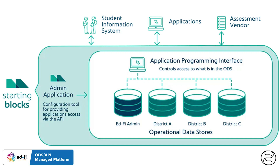For example, a student information system, or SIS, will send data using the EdFi API to Starting Blocks. Then Stadium will use the EdFi API to pull data into the data warehouse to power downstream applications like Rally and Podium. This API-based approach allows us to consistently share data, and it allows districts to only integrate data once. So instead of managing custom connections and duplicating efforts, districts can send data one time, in one format, to one place, and it can be used for many downstream applications.